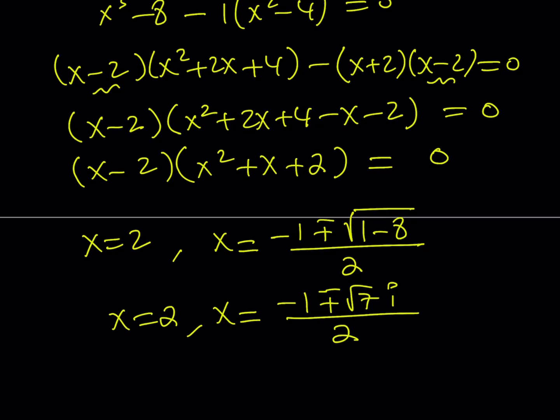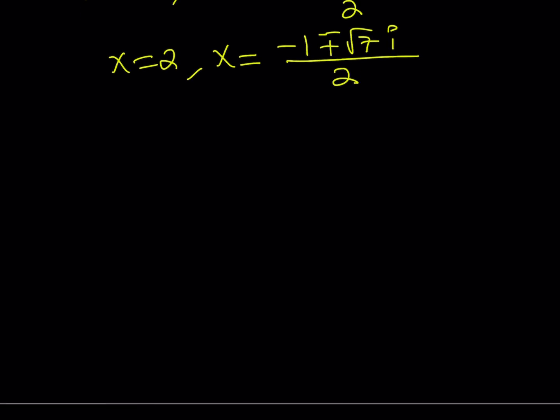So we have three solutions. One of them is real. The other two are complex conjugates. Well, x equals 2 is also a complex number because it is a real number. Anyways, at the end of this, I'm going to show you the graph of this also after we're done with both methods. Okay, let's go ahead and take a look at this second method.